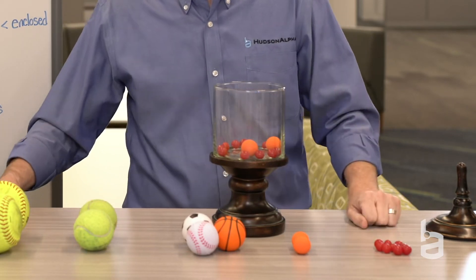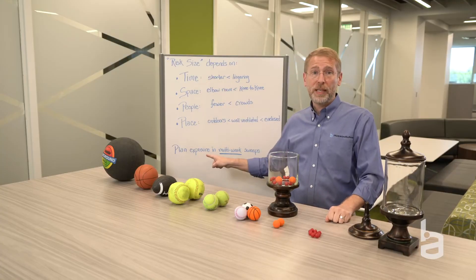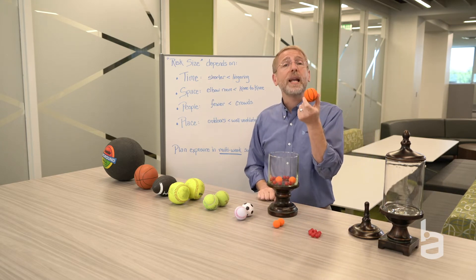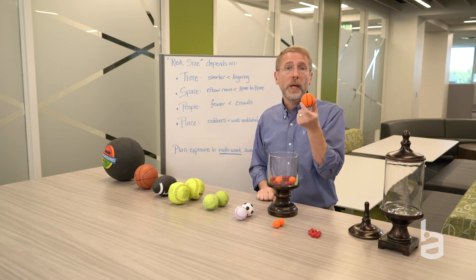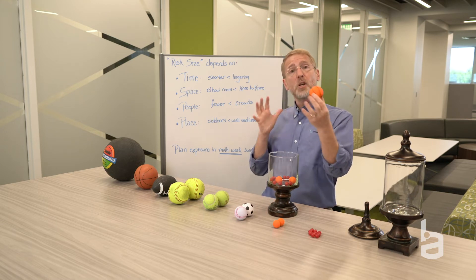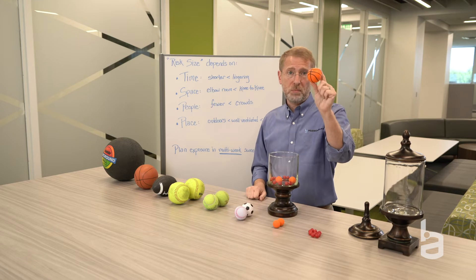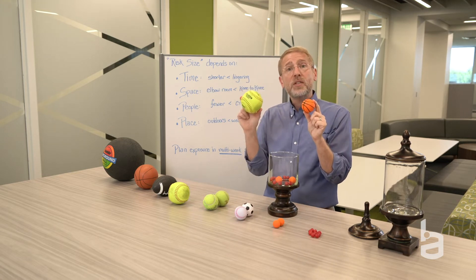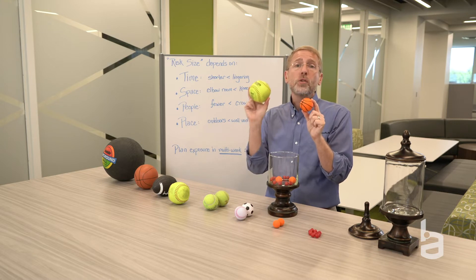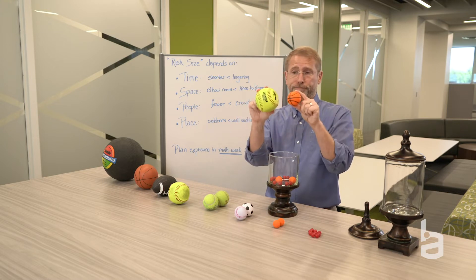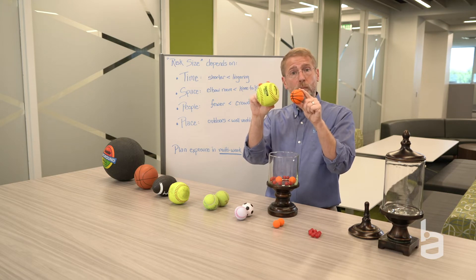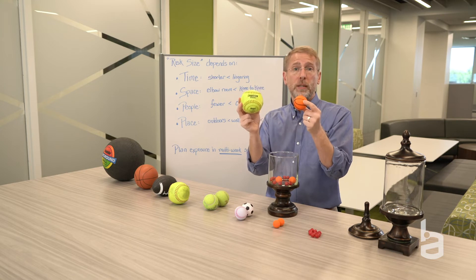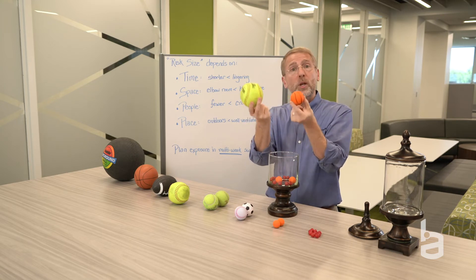Now let's talk about going to a restaurant. Getting together with two or three friends at an outdoor cafe for a relatively quick meal with enough space in your outdoor booth is quite different from getting together with 20 people inside for a three-course smorgasbord sitting knee to knee. There's a whole range of risk factors in going out to a restaurant, and you've got to make the decision about which of these you're going to do.